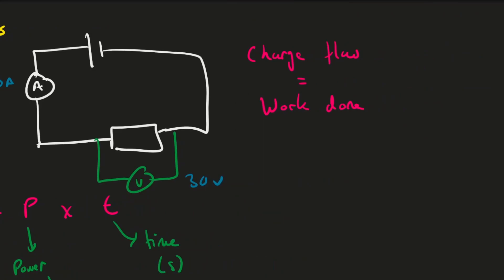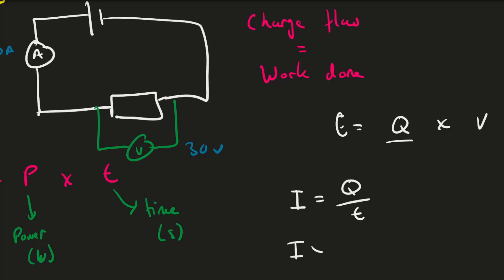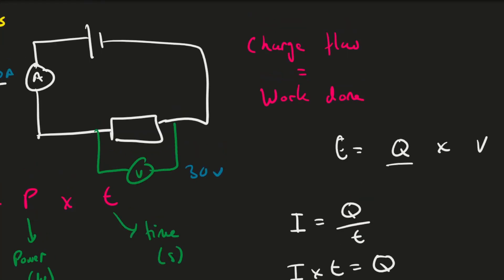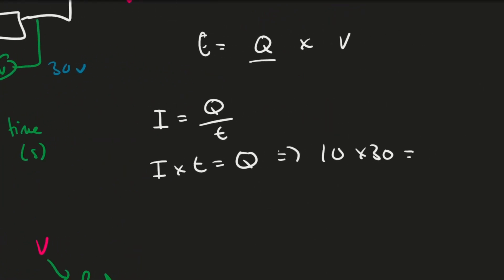We'll use the equation: energy transferred equals charge flow multiplied by voltage. To find the charge flow, we use the relationship that current equals charge flow divided by time, so charge flow equals current multiplied by time. With a current of 10 amps and a time of 30 seconds: 10 × 30 = 300 coulombs.